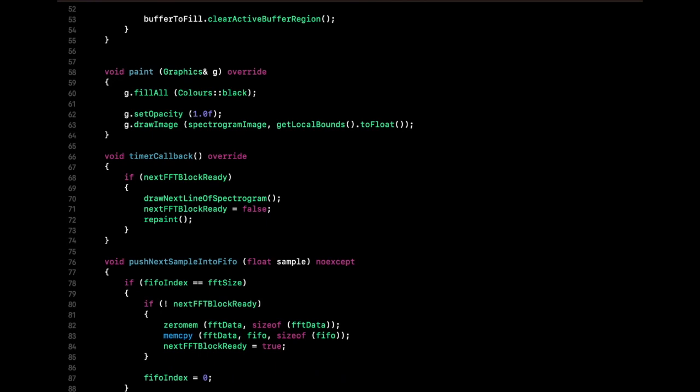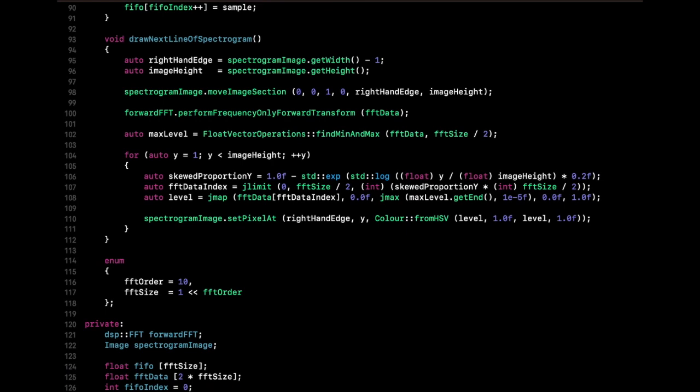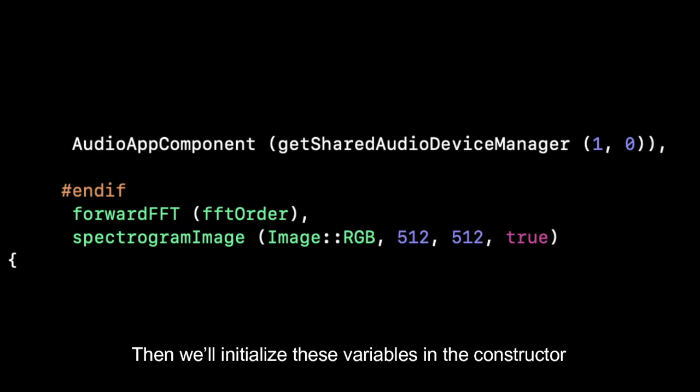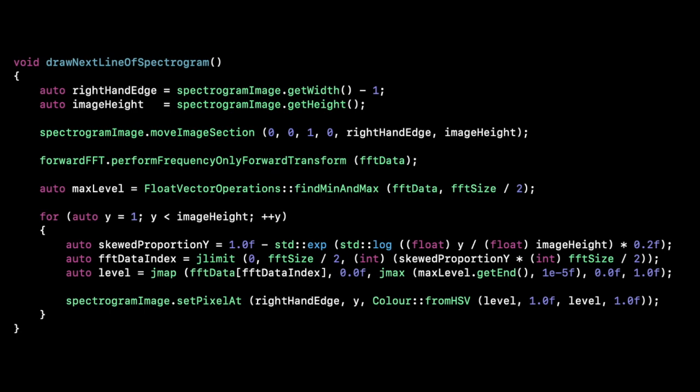First, we declare the variables required for implementing the FFT. Then, we'll initialize these variables in the constructor, code the sampling processing unit, and implement the pixel coloration. Finally, we'll update all the results onto the GUI.